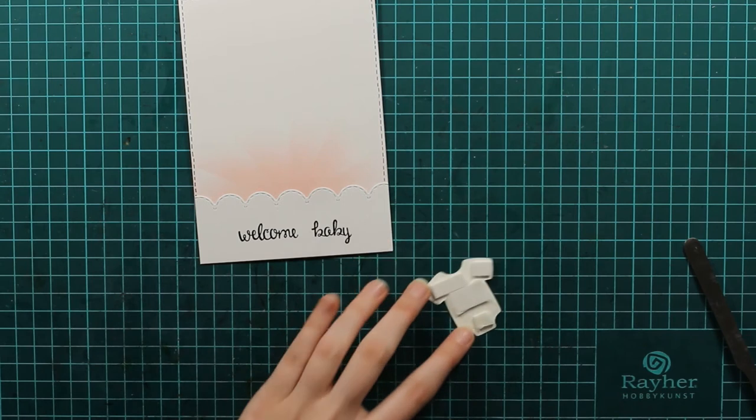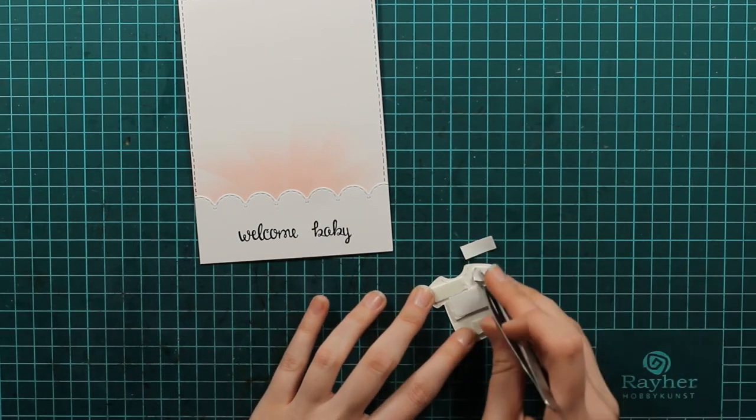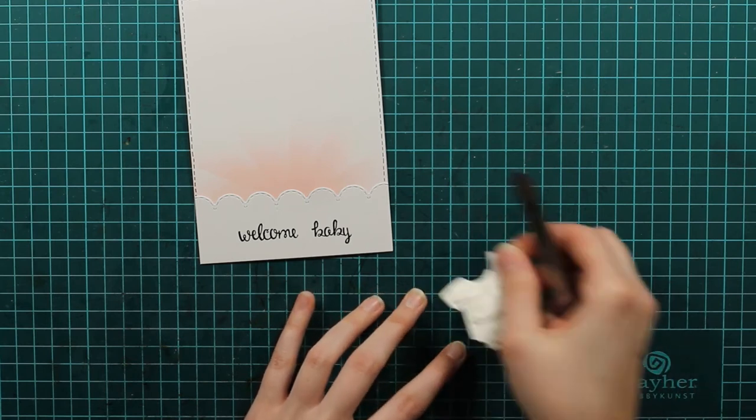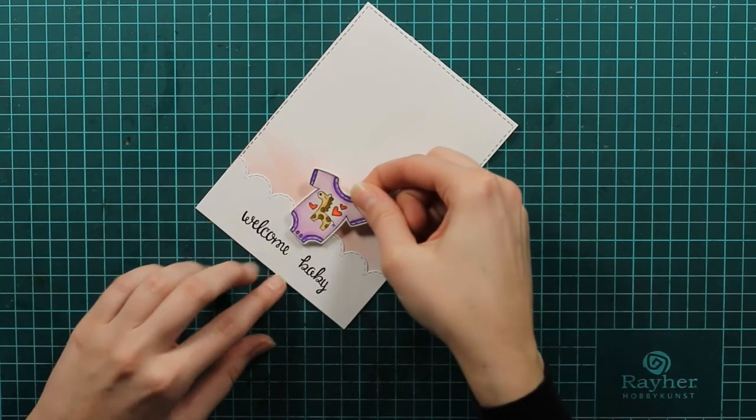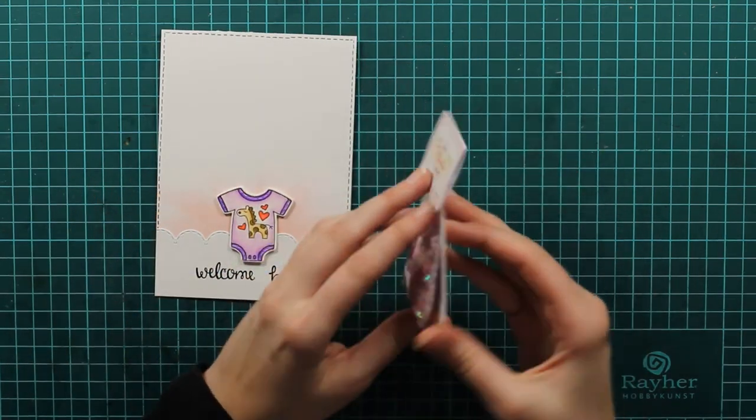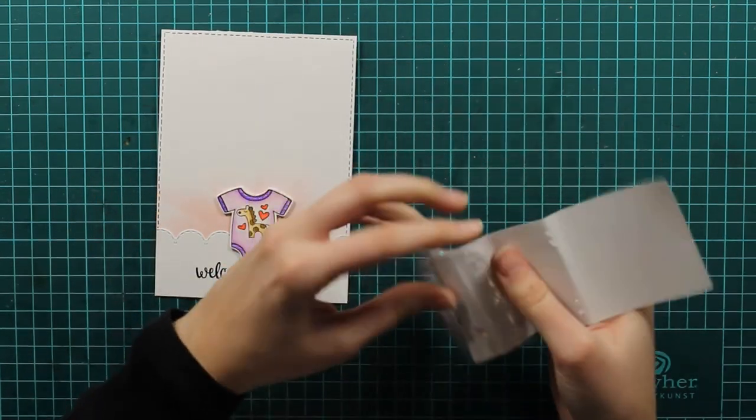If you want to make even more dimension you can use two foam squares or foam rectangles glued together and you will have the double height. And now I will just finish it off with these sequins.